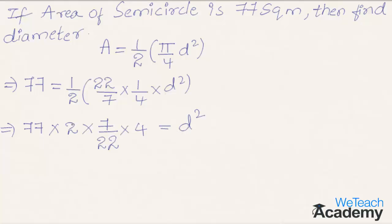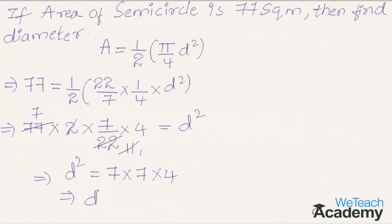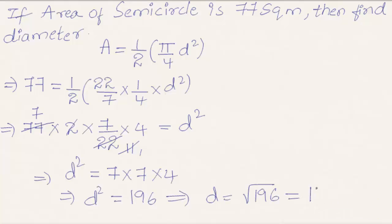Now let us simplify. Here 22 divided by 2 gives 11, and 11 × 7 = 77, so those cancel. We get d² = 196, which means d = √196 = 14. So the value of diameter is 14 meters.